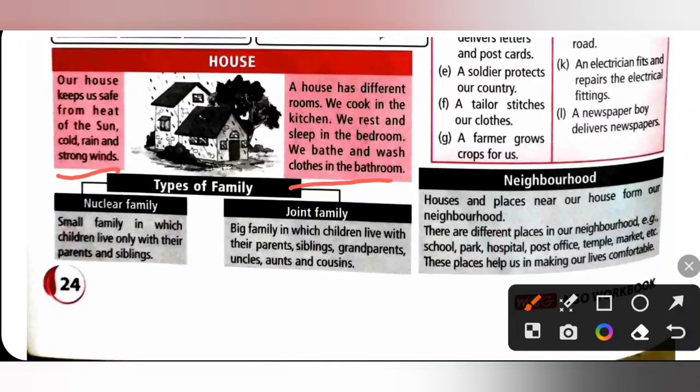And then Family. Types of Family. There are two types of family. Nuclear Family and then Joint Family. Nuclear Family is a small family in which children live only with their parents and siblings. Joint Family is a big family in which children live with their parents, siblings, grandparents, uncles, aunt and cousins.